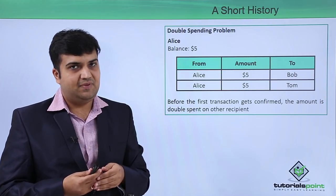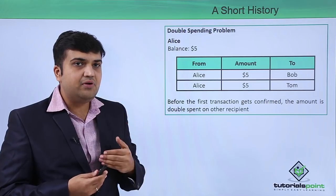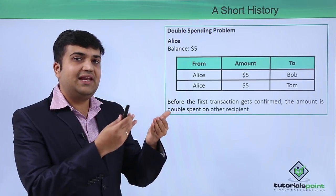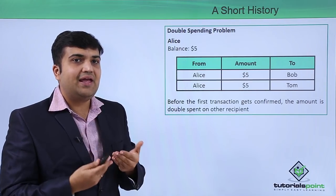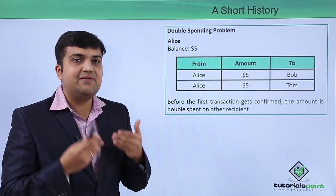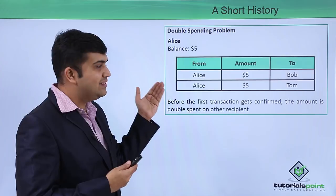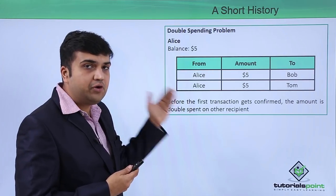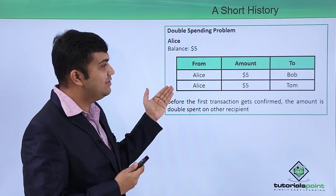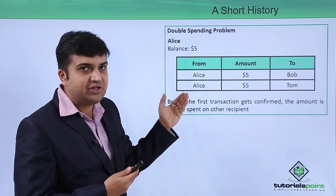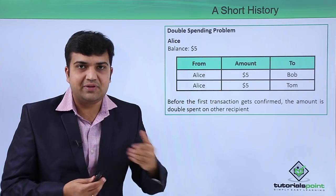Before the ledger is received and confirmed by every participant of the network, an attacker sends fraudulent data that Alice is having a $5 transaction with Tom to the rest of the network.